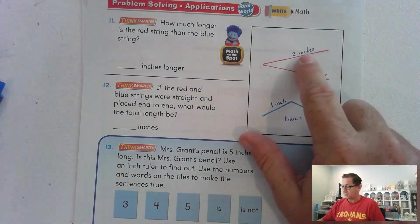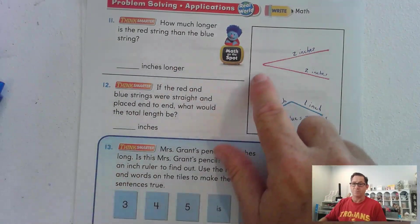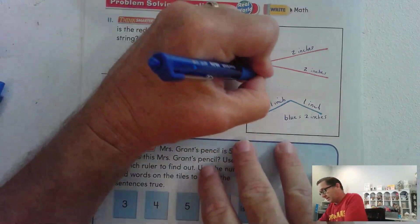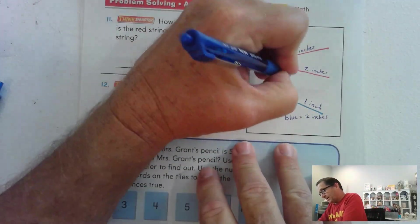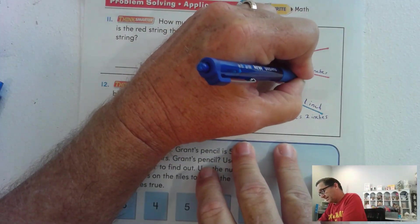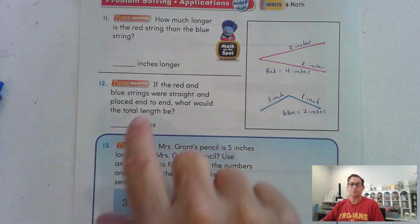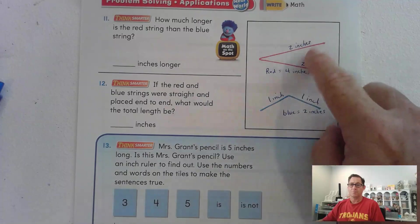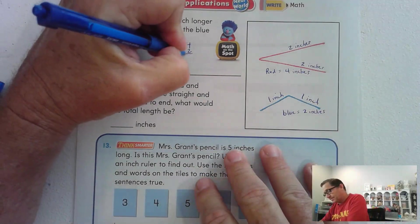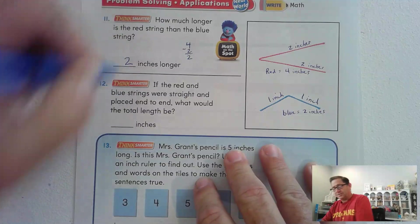And what if we took this red and we made it totally straight? Well, again, we'd have two plus two. So the red equals four inches. So now, how much longer is the red than the blue? Well, four minus two is two. So two inches longer.